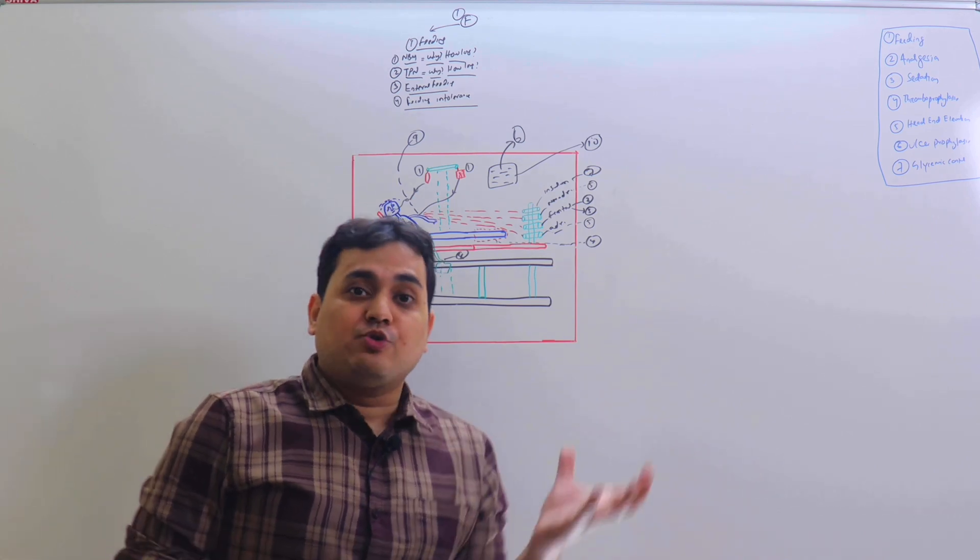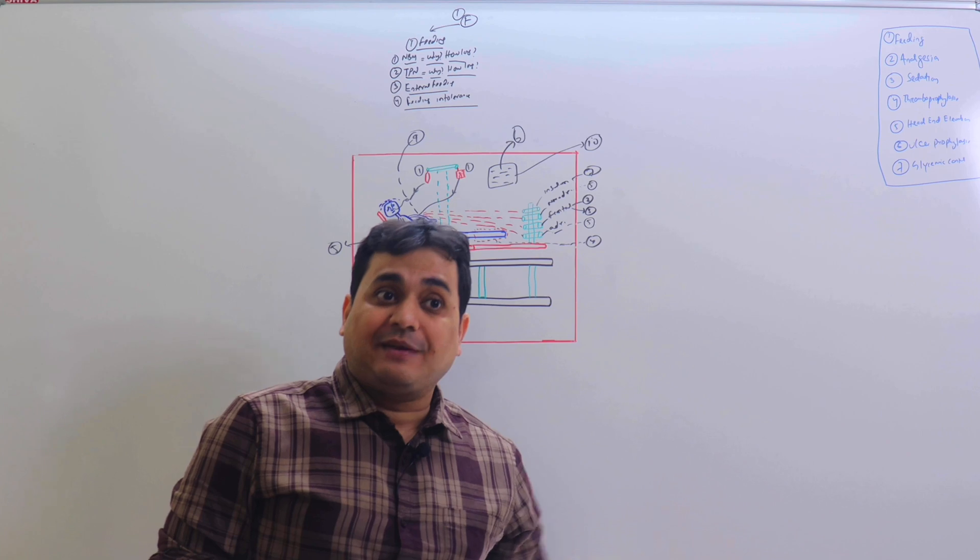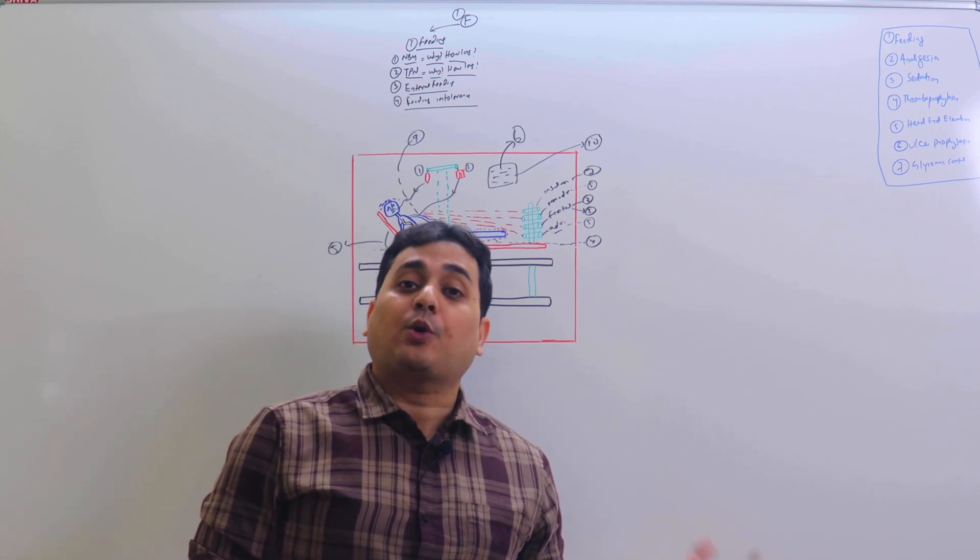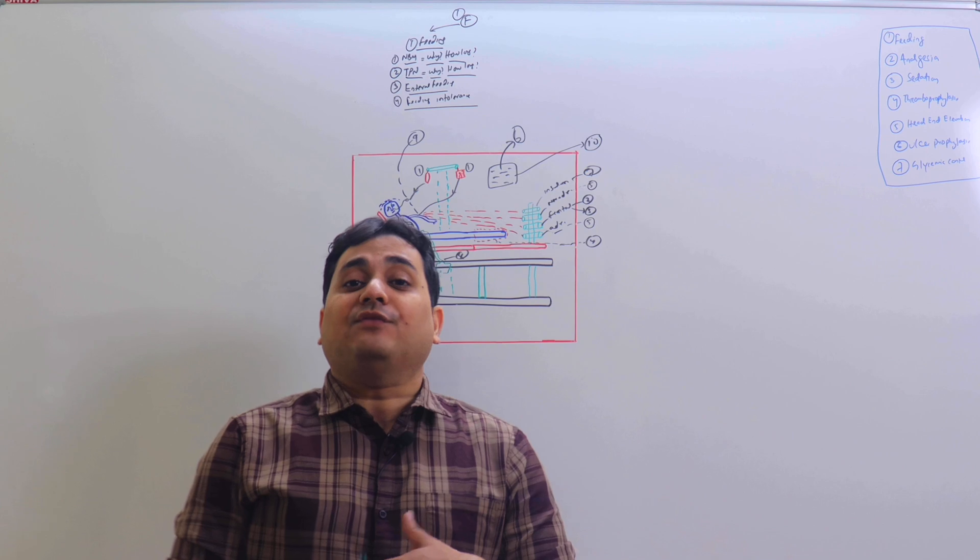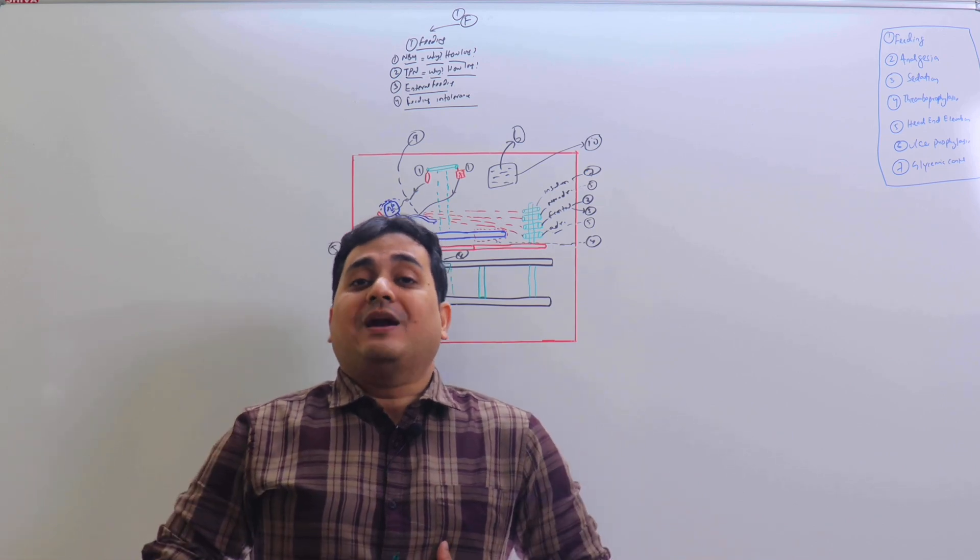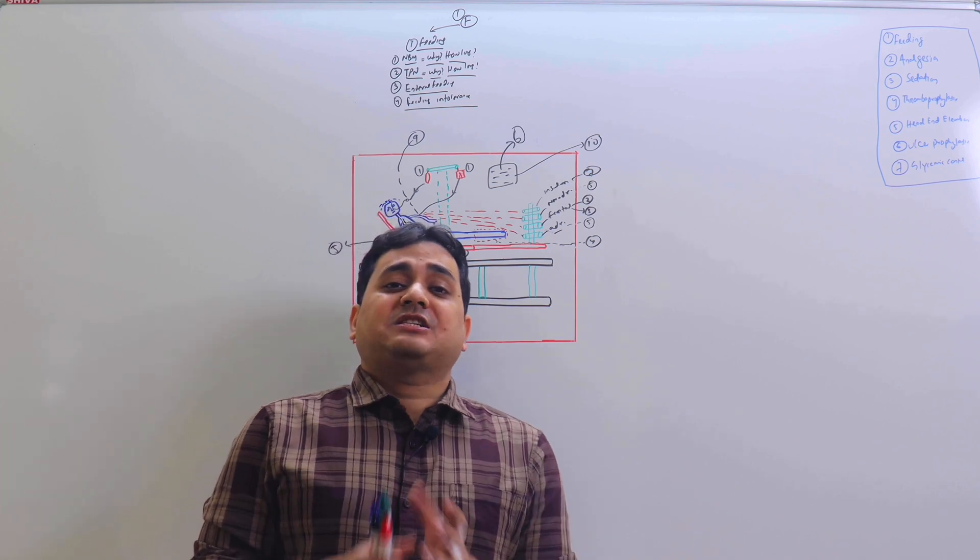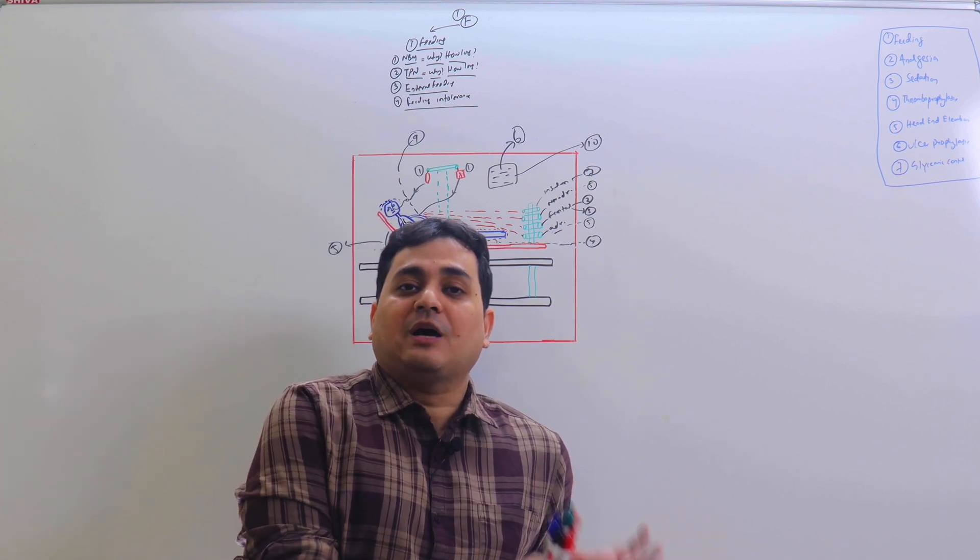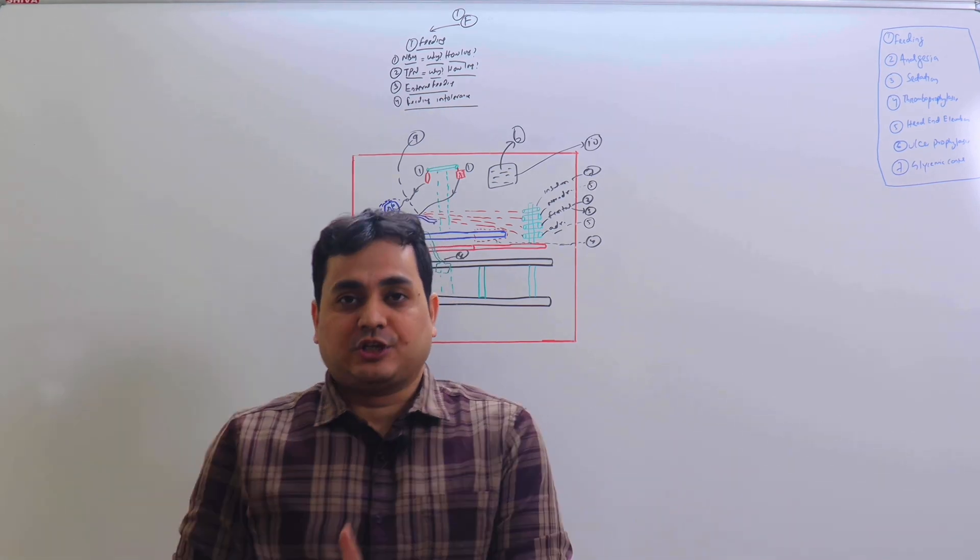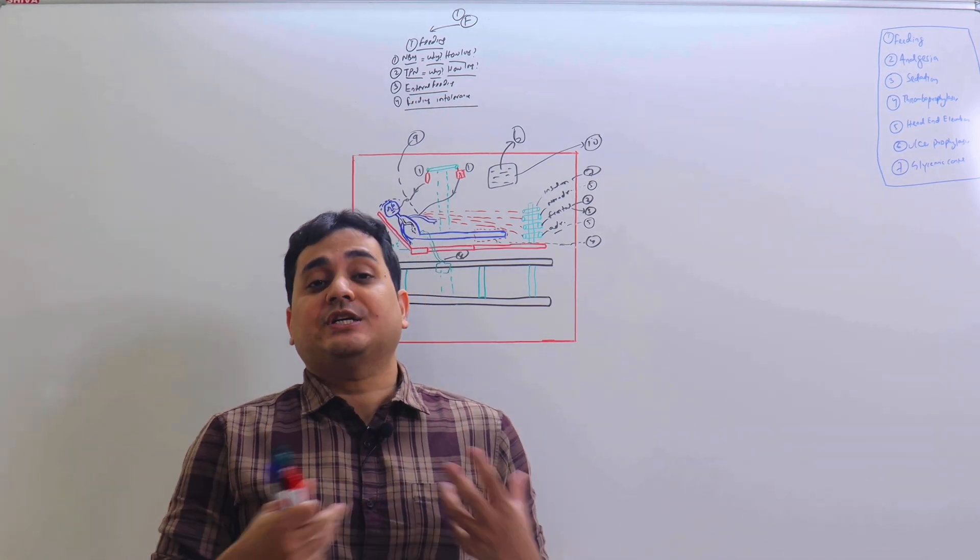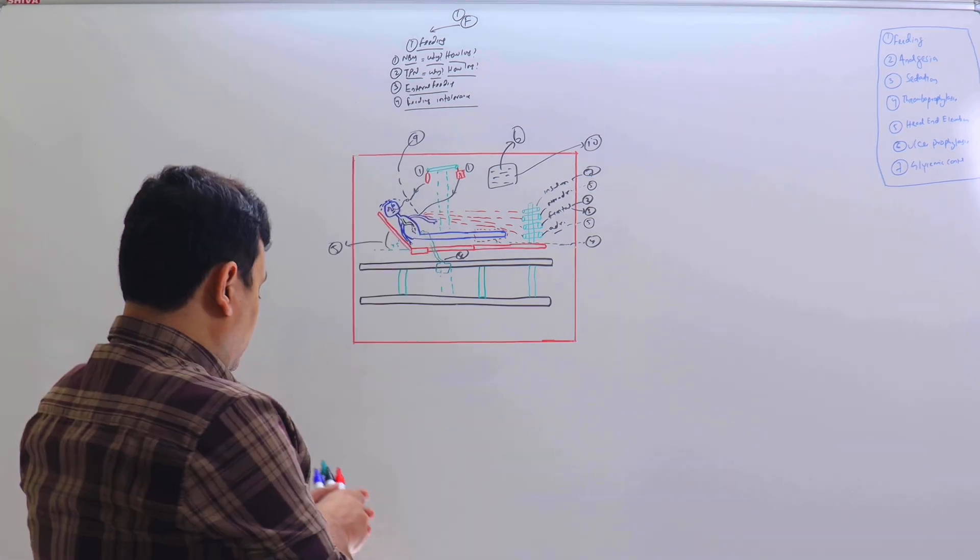Number four is prevention of feeding intolerance. What are the preventing methods? Keeping the head end elevated, using prokinetics, correcting the electrolytes as soon as possible, keeping potassium and magnesium more than the required limit. If a patient is having feeding intolerance, it will be manifested by vomiting, abdominal distension, high RT aspirates.